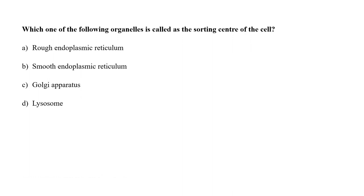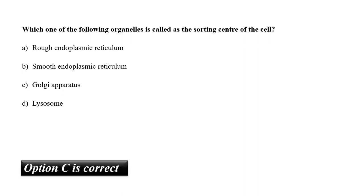Which one of the following organelles is called the sorting center of the cell? A. Rough endoplasmic reticulum, B. Smooth endoplasmic reticulum, C. Golgi apparatus, or D. Lysosome? The Golgi apparatus carries out sorting, packaging and distribution of components within the cell. Thus it is called the sorting center of the cell. So the correct answer is option C.